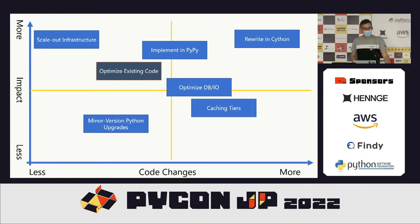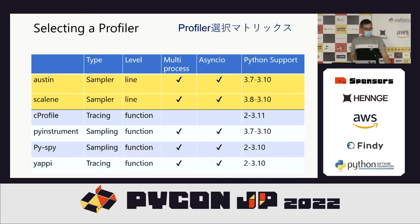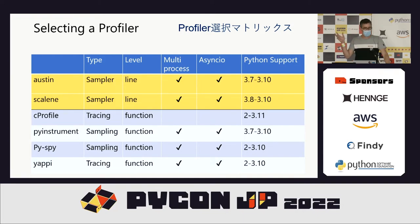Another option is upgrading Python versions. With each version of Python 3 it's been slightly faster. Before deciding whether your code is faster, you need to benchmark it. There are lots of ways of benchmarking Python code — it depends on which type of profiler you want to use. There are two types: a sampling profiler and a tracing profiler.